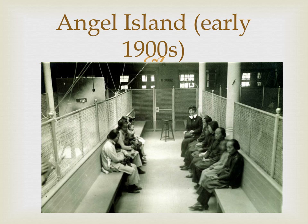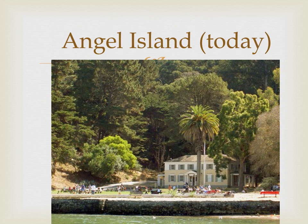Angel Island was a little less welcoming — there was no Statue of Liberty for the Asians. It was a little more like a prison. Today Angel Island is a California state park. If you came to America you went through Ellis Island or, if arriving from the Pacific, through Angel Island in California.